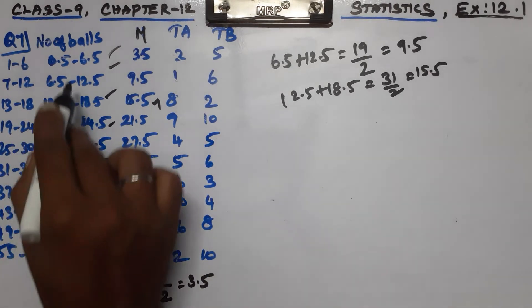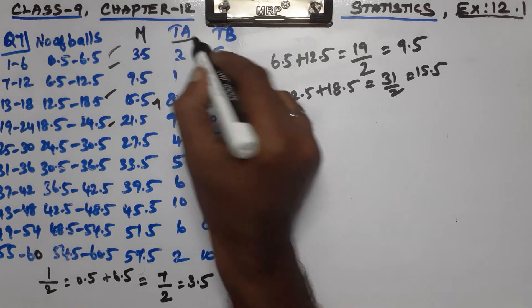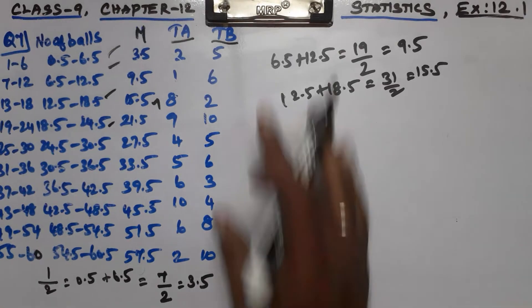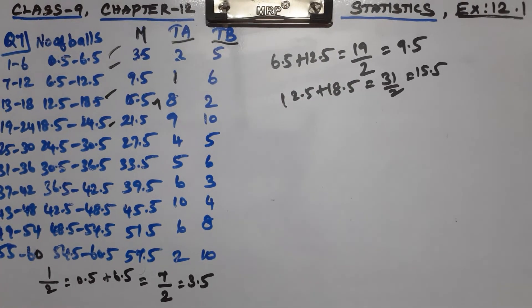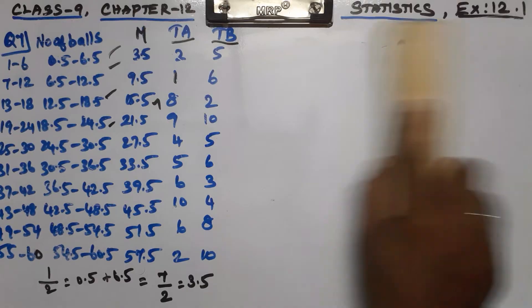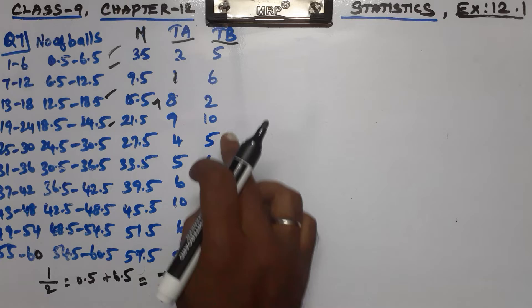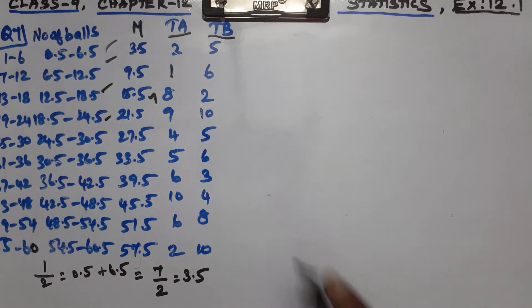Now we can find the midpoint numbers. The midpoint is 40.5. Next, Team A and Team B — this is the score. We can now see a frequency polygon graph. We will plot two lines — Team A and Team B — and go to the next step.